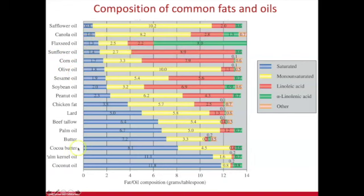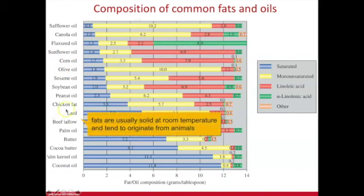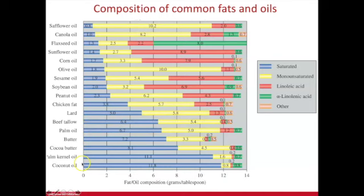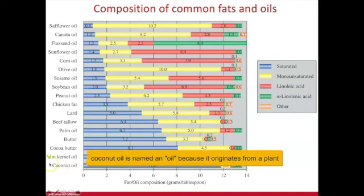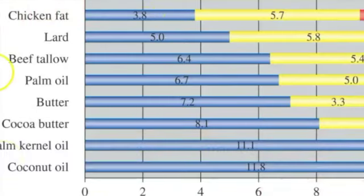Down at the bottom, these tend to be of animal origin — chicken, lard, beef tallow, and butter from cows as well. One notable entry at the very bottom is coconut oil, which is solid at room temperature. These animal-origin fats have a high amount of saturated fat.